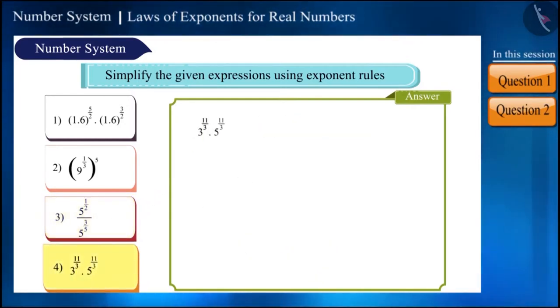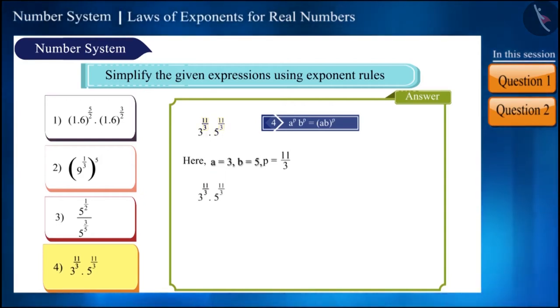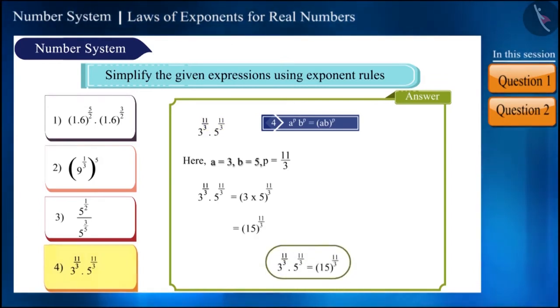Now look at the last number. Here, the base is different and the exponents are the same. Here, we will use the rule of exponents. A equals 3, B equals 5, and P equals 11/3. We get 3 multiplied by 5 raised to the power 11/3. We can also write it as 15 raised to the power 11/3.